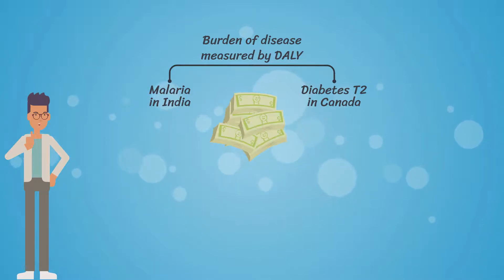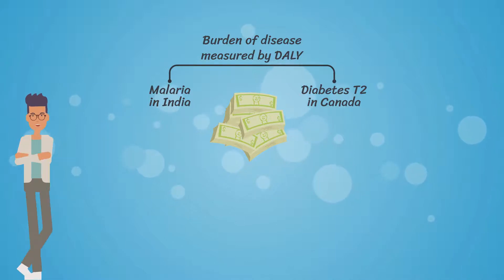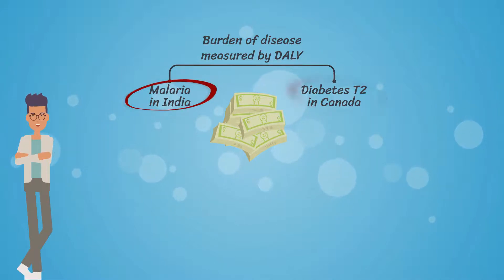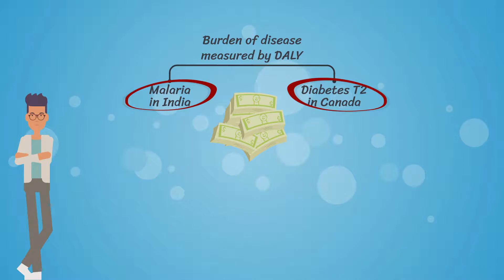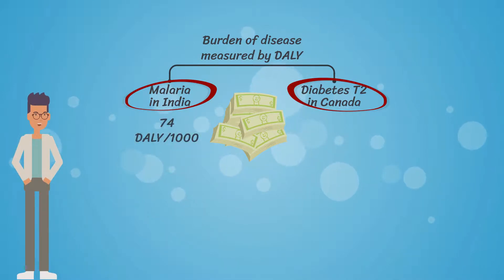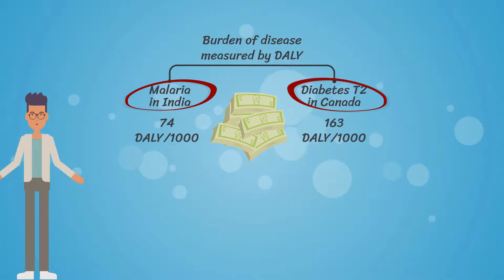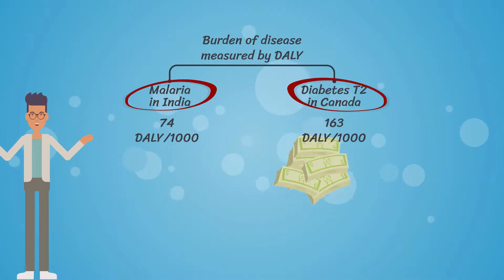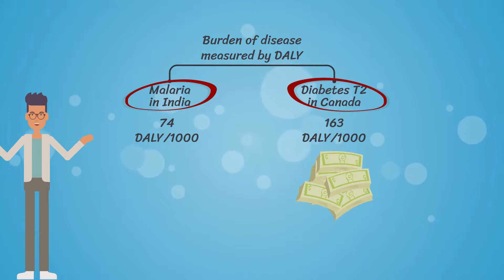Let's say you have $100,000 and need to decide if using it on combating malaria in India or on diabetes type 2 in Canada. The calculation of DALY shows 74 in India and 163 in Canada, and you might decide to donate your $100,000 to the NGO who is helping people with diabetes in Canada.